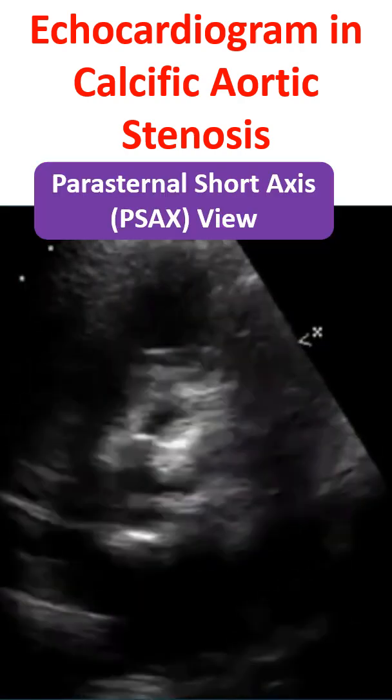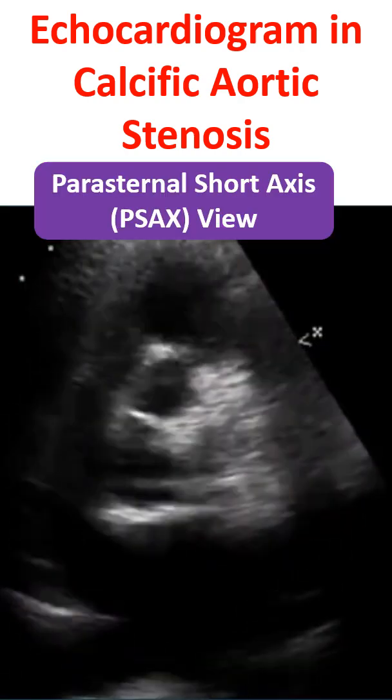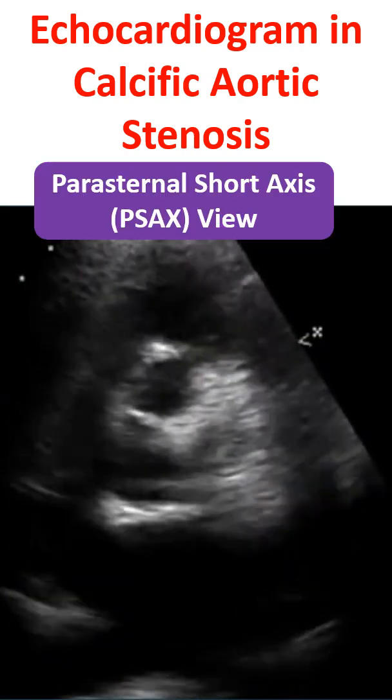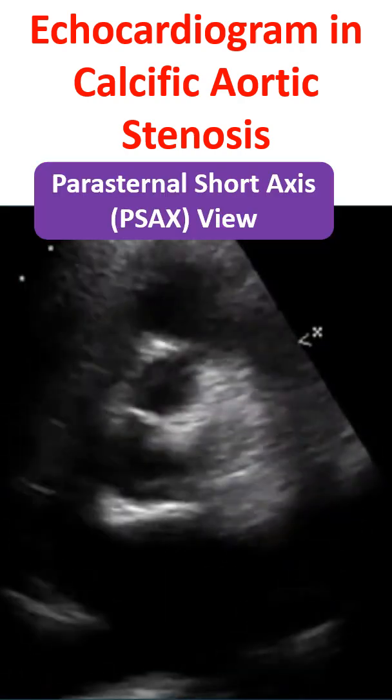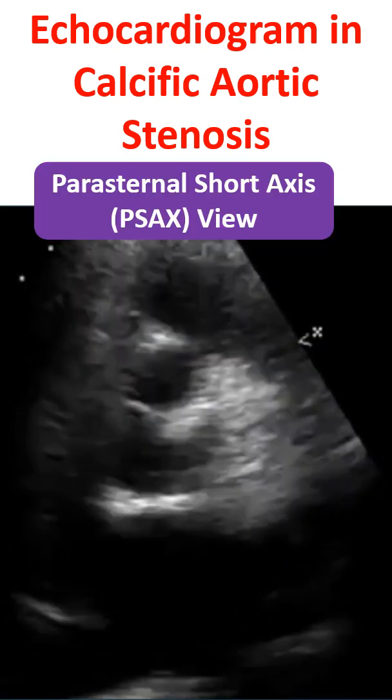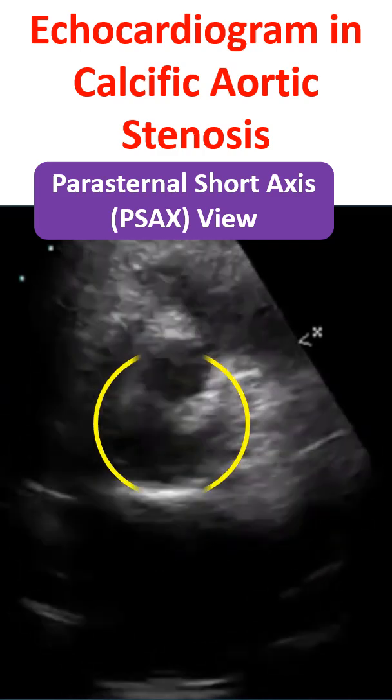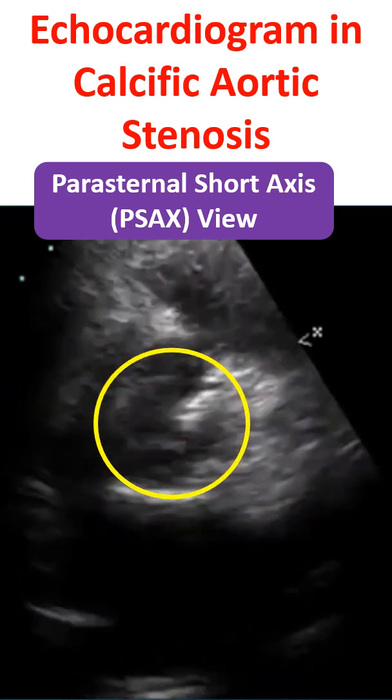Calcific aortic stenosis in parasternal short axis view showing three leaflets. Dense calcification is visible.